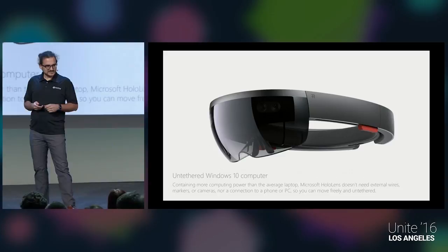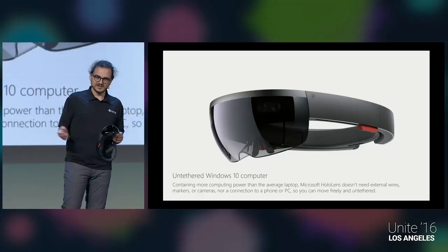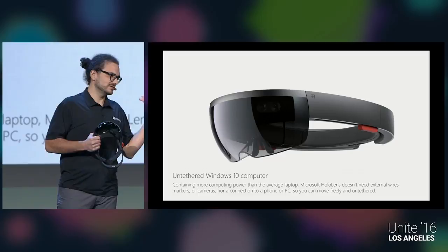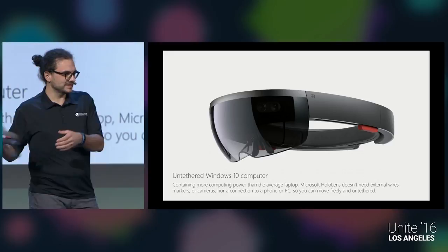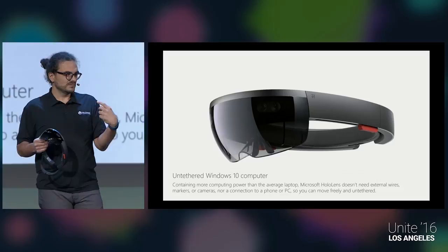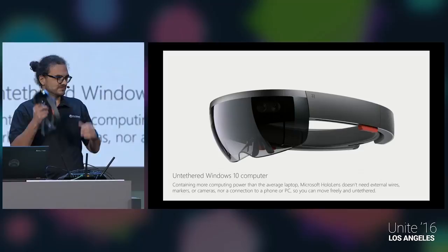The HoloLens is a fully untethered device — no cable connected, unlike the HTC Vive or Oculus where computing is done on a PC. It's fully self-contained with all computing inside the device. It runs Windows 10, so you can install Windows Store apps, open Microsoft Edge, and pin browser tabs on your walls. You can walk freely around the room, and you can implement multi-lens solutions — if we all wore a HoloLens right now, we could all see the same hologram together via networking.